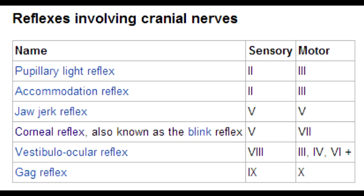What is the efferent nerve that helps cause the corneal reflex? The efferent nerve that helps cause the corneal reflex is the temporal branch of the facial nerve, which has innervation on the orbicularis oculi.